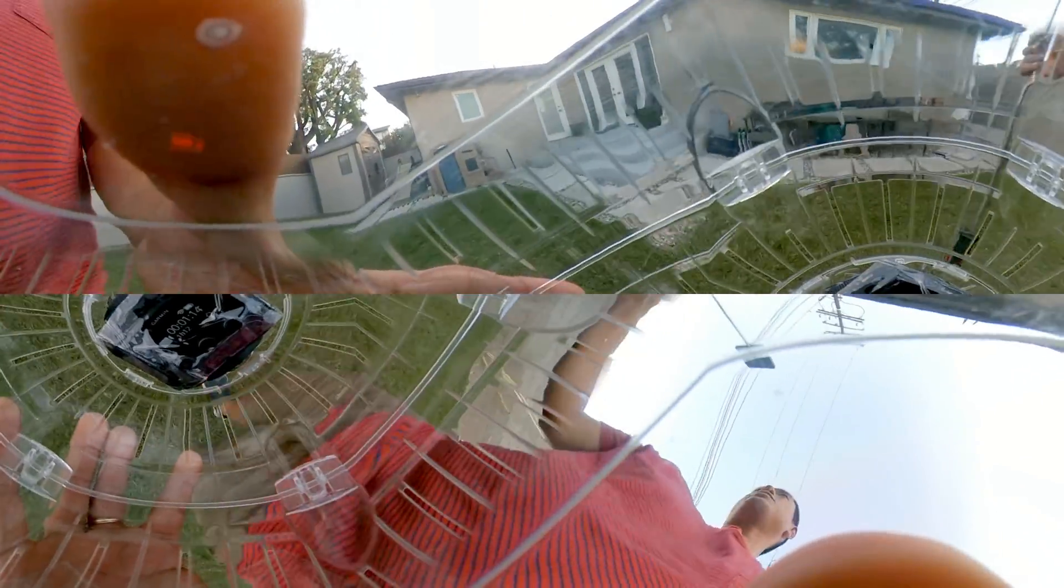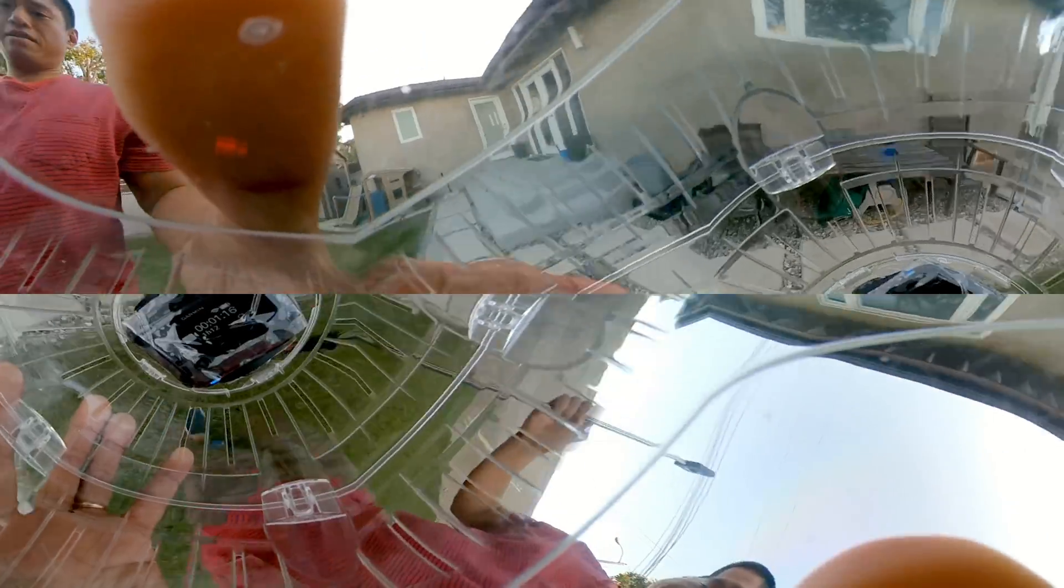So to summarize, both of these 360 cameras did very well in the stabilization test. If you want the best-in-class stabilization with no issues, you can get the Garmin Verb 360. It also has a unique stabilization mode that will stabilize the camera in the direction of movement. It can also overlay speed and other statistics on your 360 video. The Verb 360 is $799.